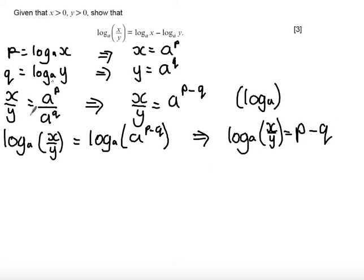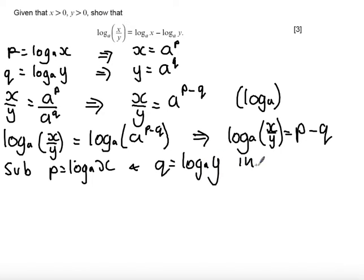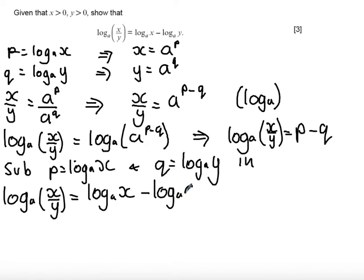At this point we go back to our original definitions and we say sub p equals log base a of x and q equals log base a of y. Therefore, log base a of x over y is equal to log base a of x minus log base a of y as required.